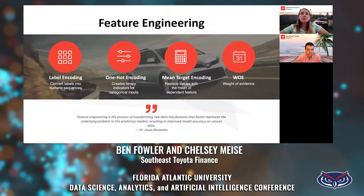For this project, Ben and I performed four different types of feature engineering techniques: label encoding, where we convert labels into numeric sequences; one-hot encoding, where we create binary indicators for categorical inputs; mean target encoding, in which we replace values with the mean of the dependent feature; and weight of evidence, in which we bin the feature and encode a value using the log odds of the good to the bad.